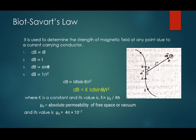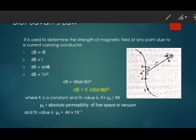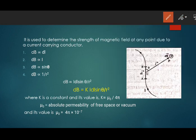This law is used to determine the strength of magnetic field at any point due to a current-carrying conductor. You can see in the figure, this is a current-carrying conductor, which is carrying a current I in the upward direction. Let us consider an elemental length of the conducting wire.